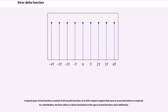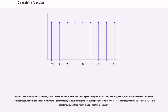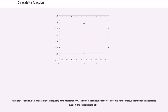As a distribution, the Dirac delta is a linear functional on the space of test functions, defined by δ(φ) = φ(0) for every test function φ. For delta to be properly a distribution, it must be continuous in a suitable topology on the space of test functions. For a linear functional S on the space of test functions to define a distribution, it is necessary and sufficient that for every positive integer n there is an integer m and a constant c such that a certain inequality holds for every test function φ. Thus delta is a distribution of order 0, and furthermore a distribution with compact support, the support being {0}.